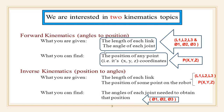We are interested in two kinematics topics: forward kinematics and inverse kinematics. Forward kinematics is known as angle-to-position kinematics, and inverse kinematics is known as position-to-angle kinematics. Forward kinematics is the process to get the coordinates of the end effector from the given angles of all joints.